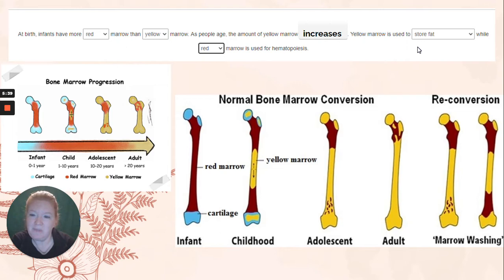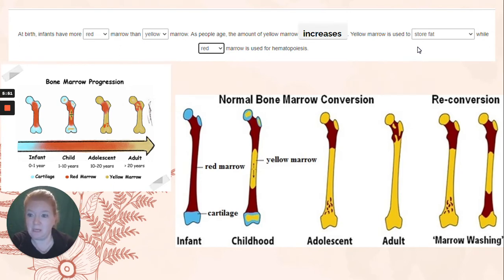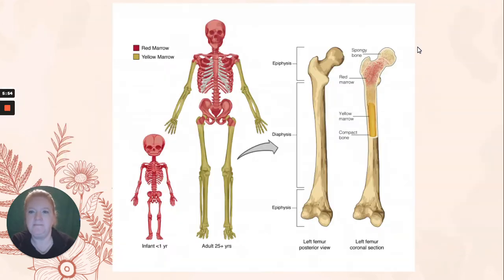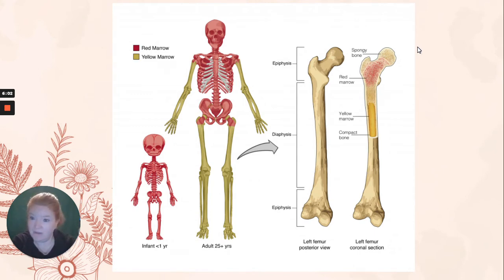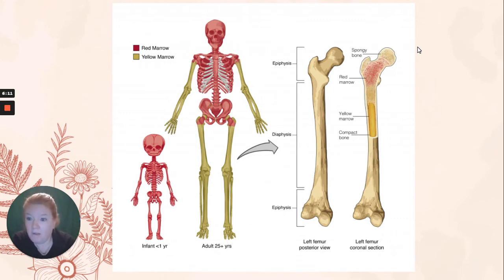Now, in times of great blood loss, some of that yellow marrow can get converted to red marrow temporarily, and then it will go back when you're done with the need to create more blood cells. If you look at the infant skeleton, the whole skeleton is red marrow. Look at the adult skeleton — there's a lot of yellow marrow now. The limbs are primarily all yellow marrow, except where the femur attaches to the pelvis and where the humerus attaches in those ball and socket joints — you do find some red marrow there.